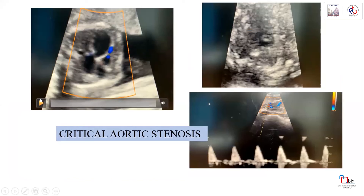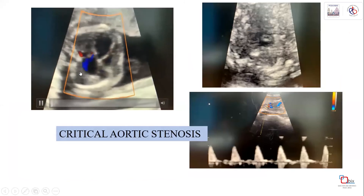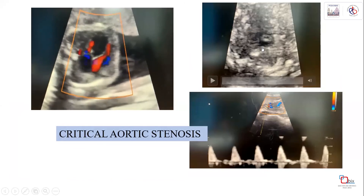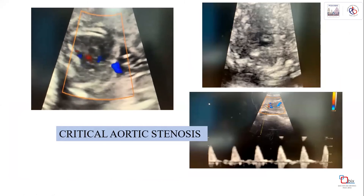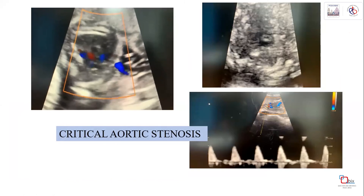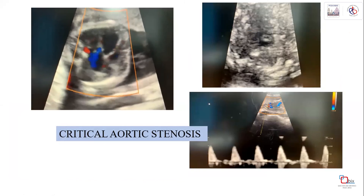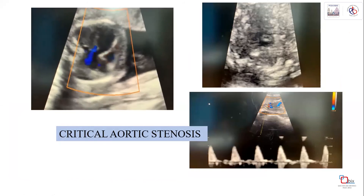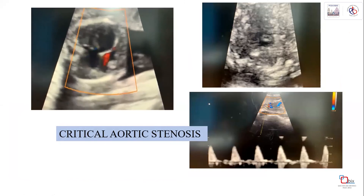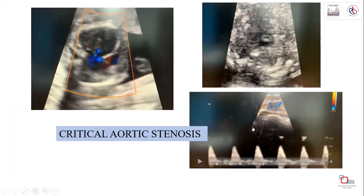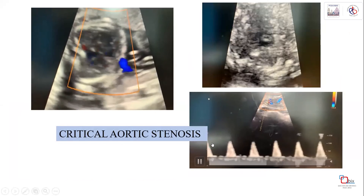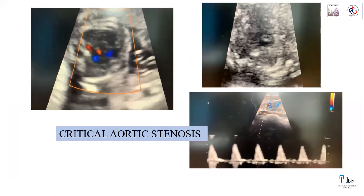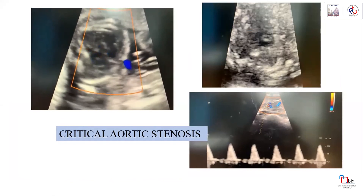This is a case of critical aortic stenosis causing ballooning of the aorta. The color flow shows how the jet narrows into the dilated aortic segment. Color flow provides additional security in diagnosis beyond structural imaging alone. Pulsed wave Doppler with peak systolic velocity measurement and other criteria also play a role, but color Doppler remains essential.